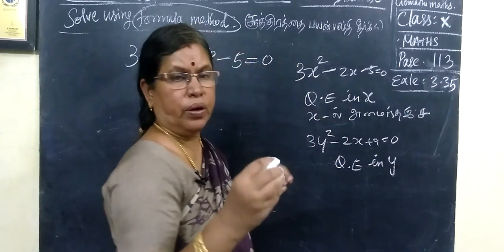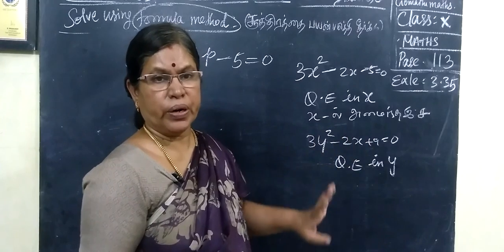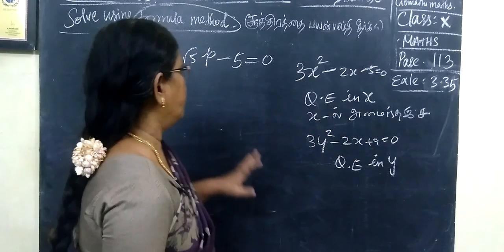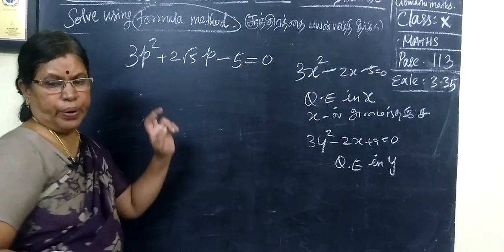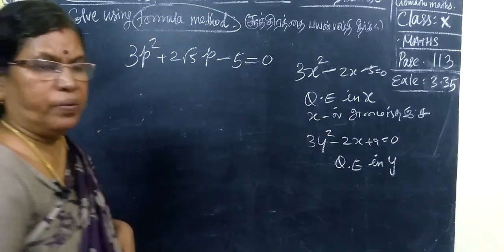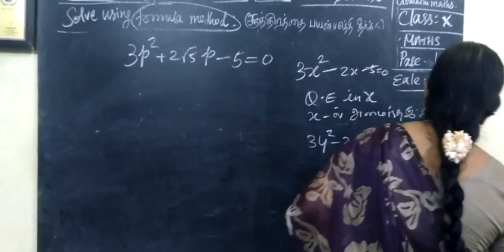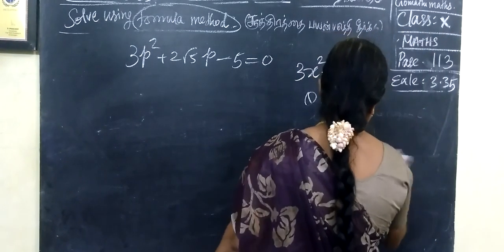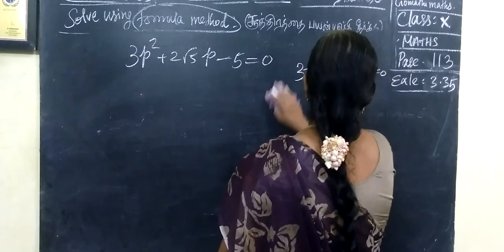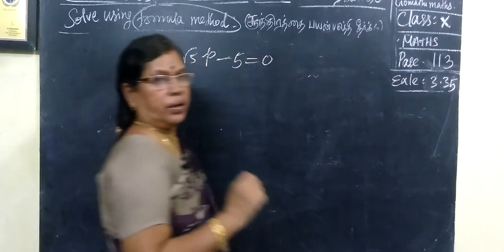So, any variable can be used. Here, p is a quadratic equation in p. So, instead of x, this is p.